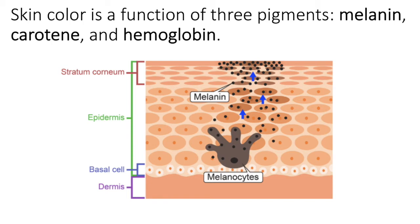Melanin is released from the melanocyte and then taken into the keratinocyte. Once it's in the keratinocyte, it migrates towards the cell's nucleus and sort of shields that cell's nucleus from the penetrating rays of UV light.